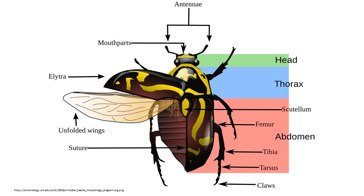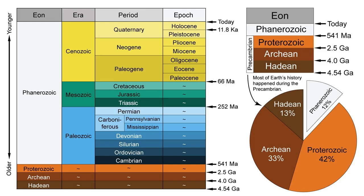Within Arthropoda, insects are classified under the subphylum Hexapoda, characterized by having three pairs of legs and a three-part body structure: head, thorax, and abdomen.